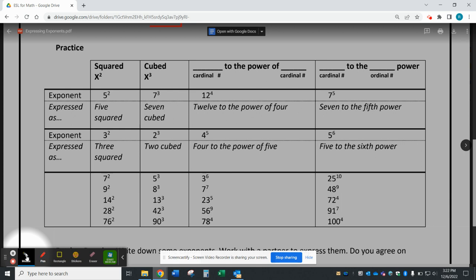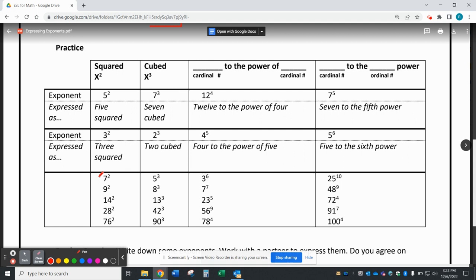And the following numbers are expressed in these ways: 7 squared, 9 squared, 14 squared, 28 squared, and 76 squared.